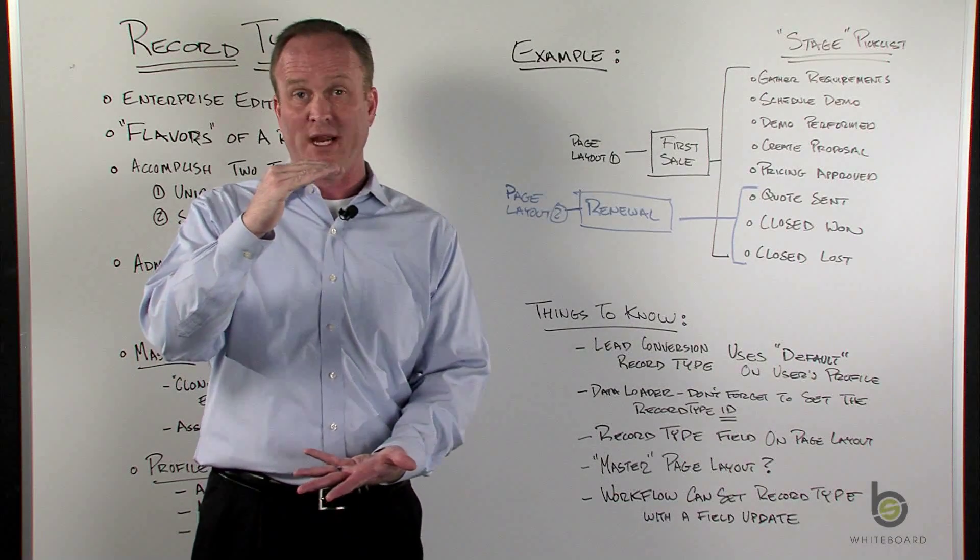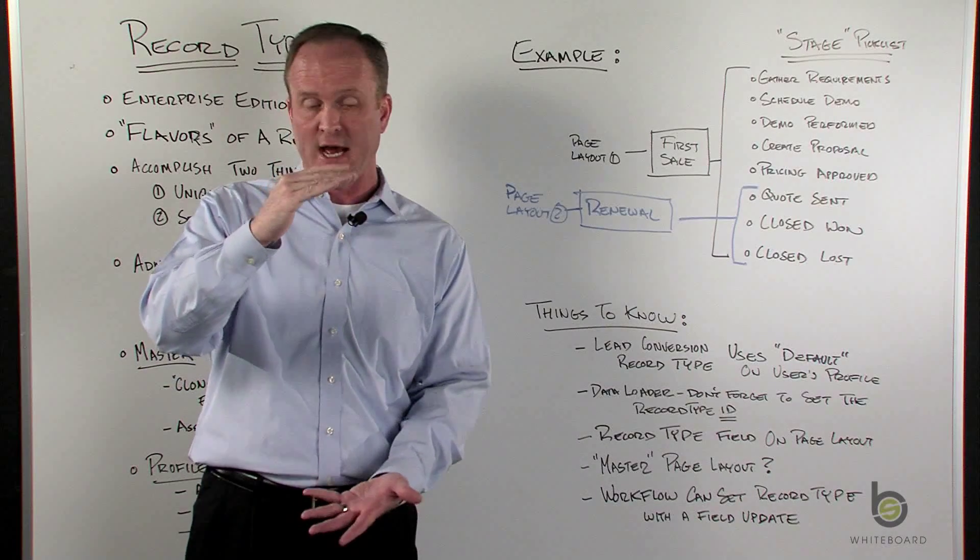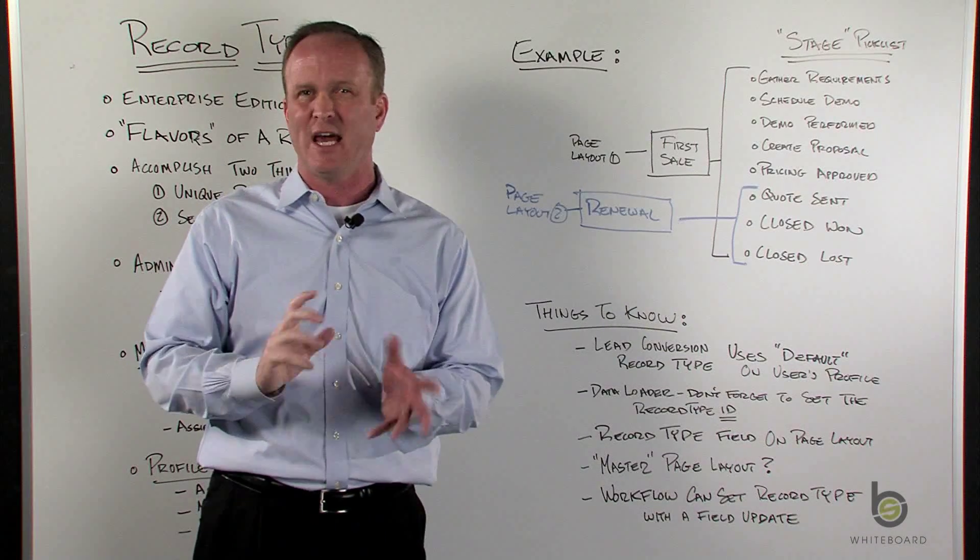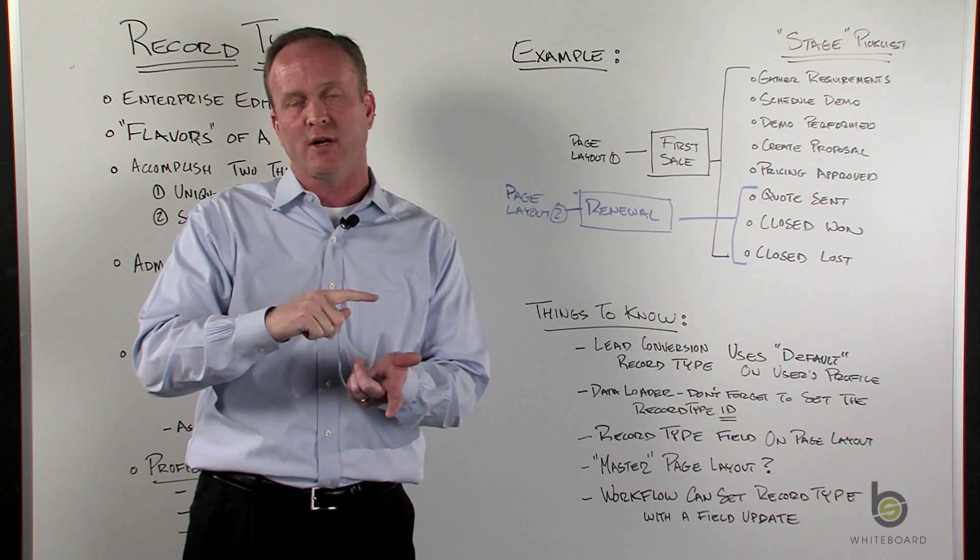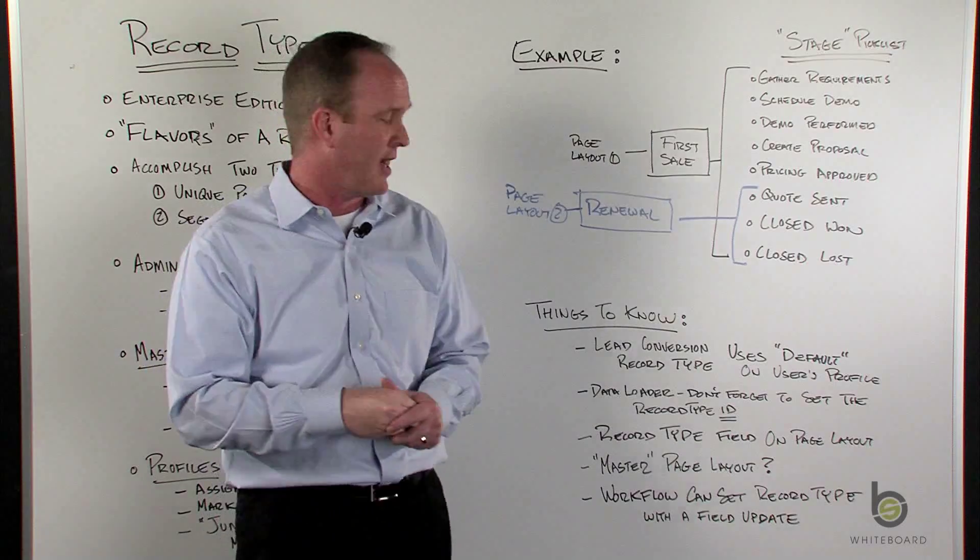An admin wants to go and flip the record type themselves and see if that field exists on a page. So a lot of times, admins will make a master record type page layout that has all the fields, so a system admin can check to see if a record has a field populated. They can quickly flip the record type to the masters, yep, that field's available, and flip it back.